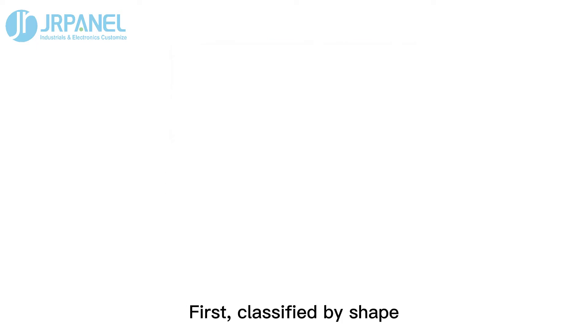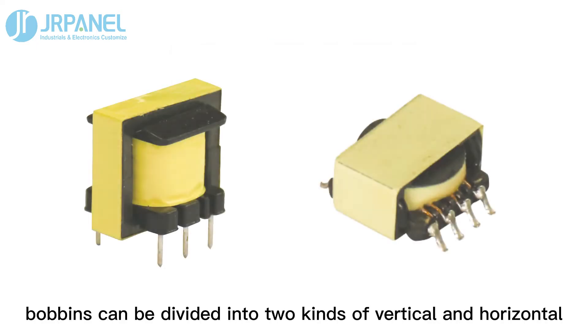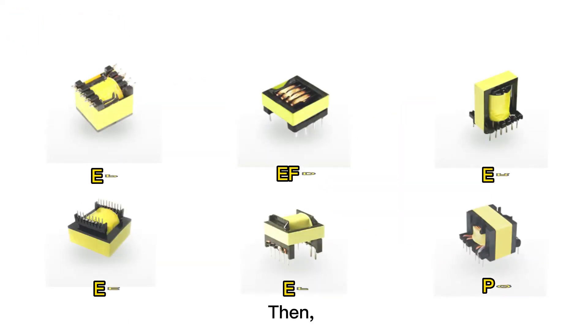First, classified by shape, bobbins can be divided into two kinds: vertical and horizontal.